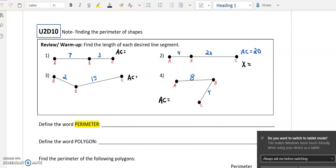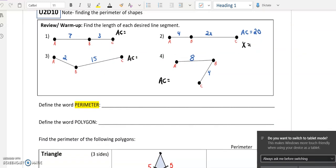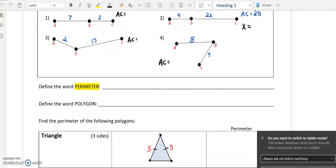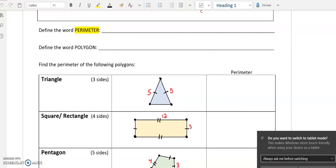We are going to skip the warm-up for the time being. You can give it a whirl if you want. It's really just looking at line segments and trying to find the total length of those line segments. But as I mentioned, today we are going to be looking at perimeter. So what does perimeter even mean?